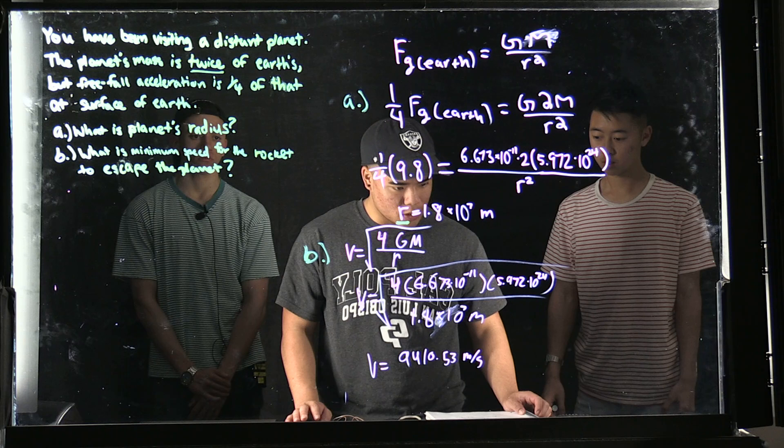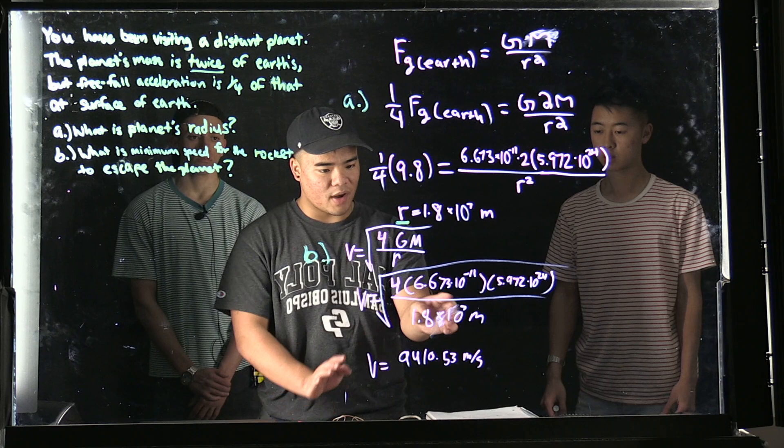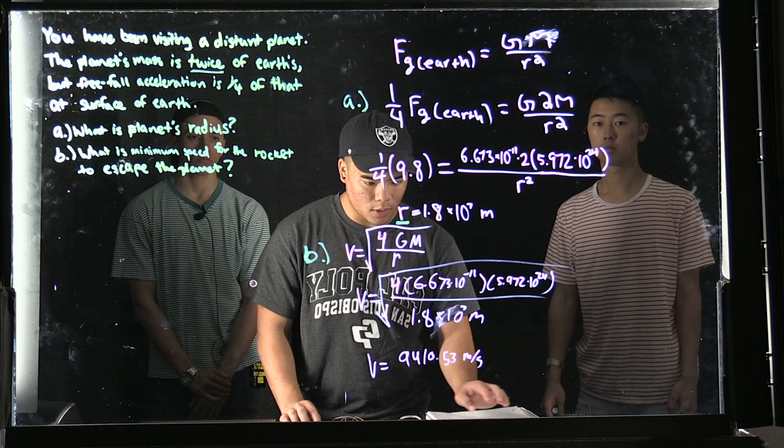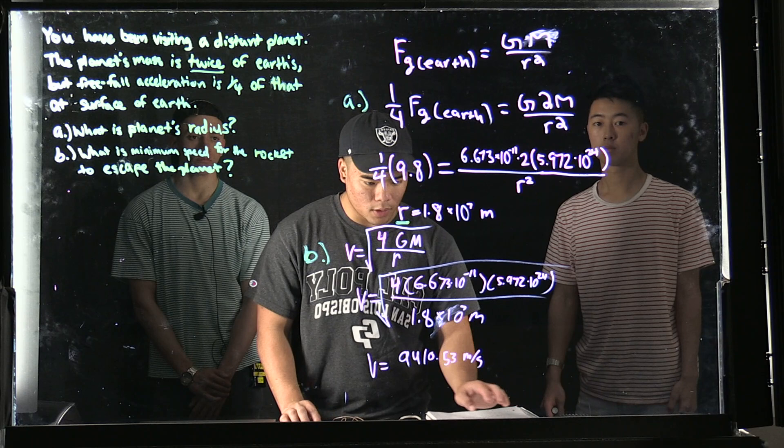Times the mass of Earth, which is 5.972 × 10²⁴, multiplied by 4, and divided by the radius from Part A. Working it all out, we get 9,410.53 meters per second.